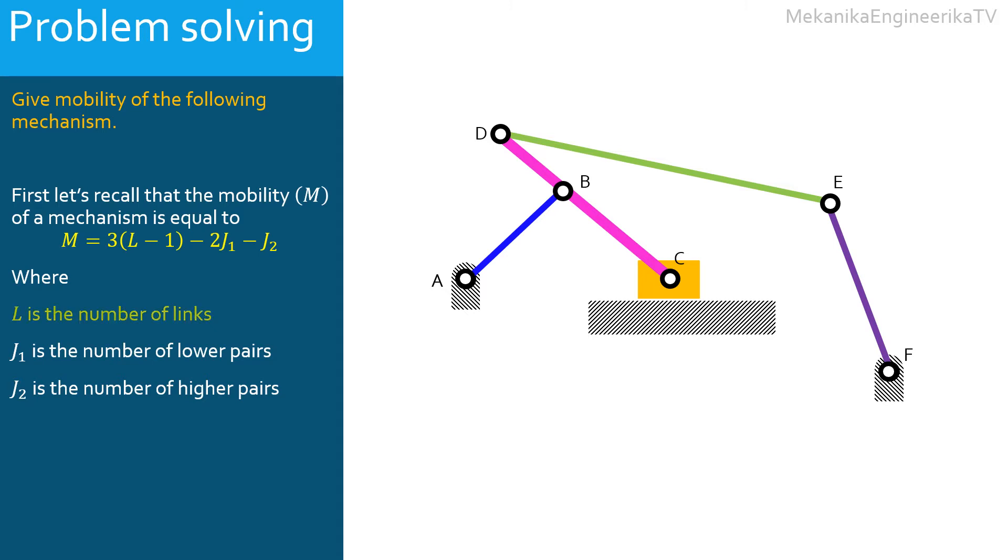Here the mechanism is made of 6 links: the ground, the slider C, and 4 bars - the bar AB, the bar CD, the bar DE and the bar EF. Thus, L is equal to 6.